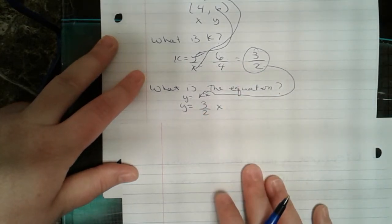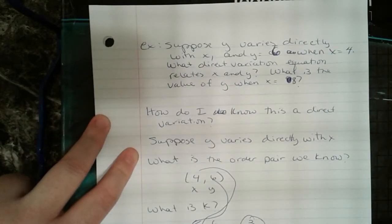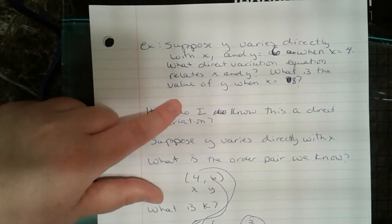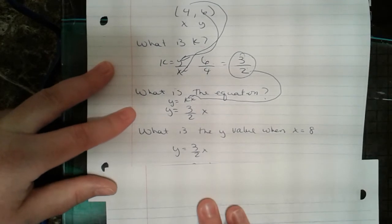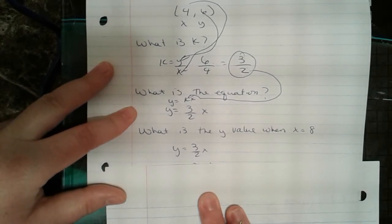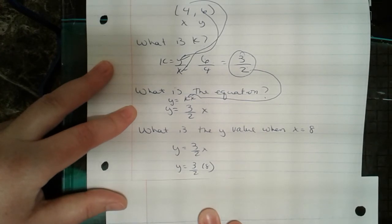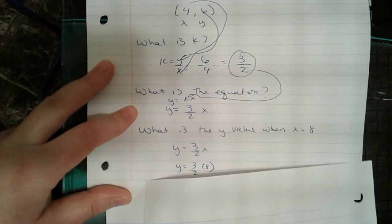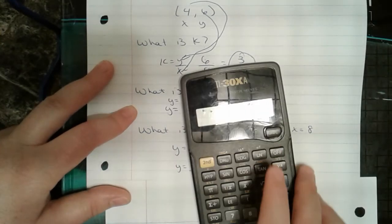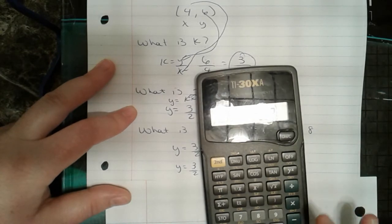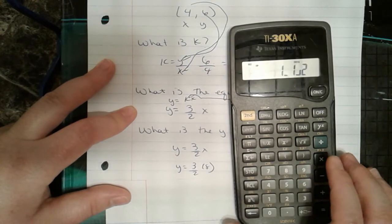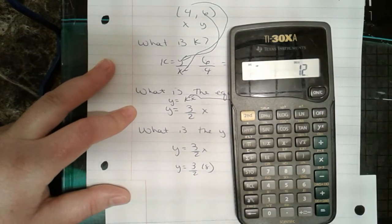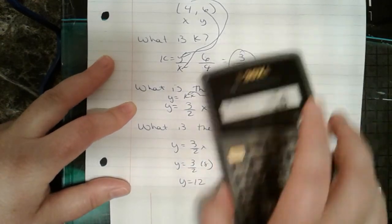Are we done? No, we have to figure out the y value when x is 8. We plug 8 into y equals (3/2)x. Using the calculator — 3 divided by 2 times 8 — gives us 12. So y is 12.